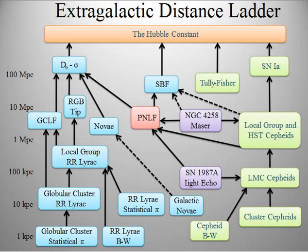The most important fundamental distance measurements come from trigonometric parallax. As the Earth orbits the Sun, the position of nearby stars will appear to shift slightly against the more distant background. These shifts are angles in an isosceles triangle, with two astronomical units—the distance between the extreme positions of Earth's orbit around the Sun—making the base leg of the triangle, and the distance to the star being the long equal-length legs.